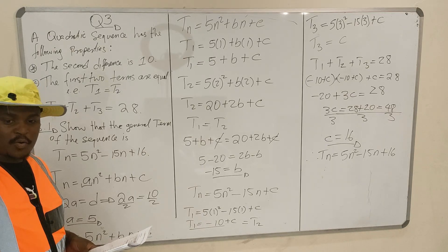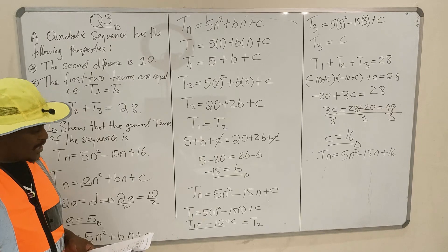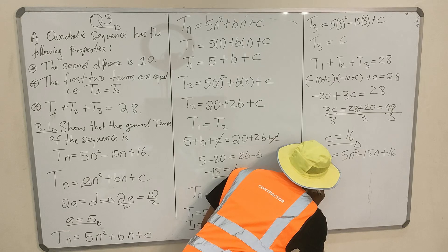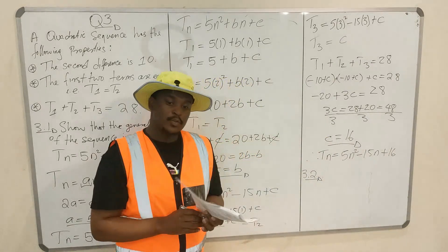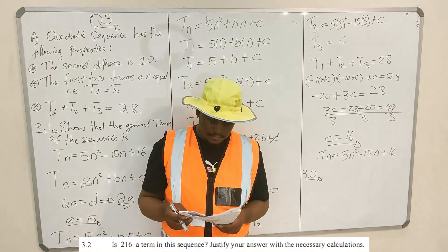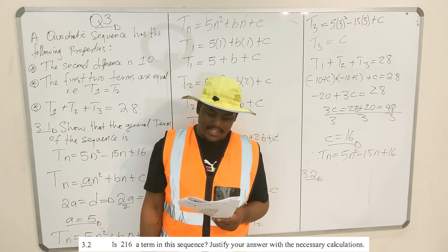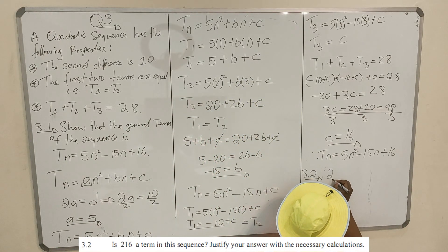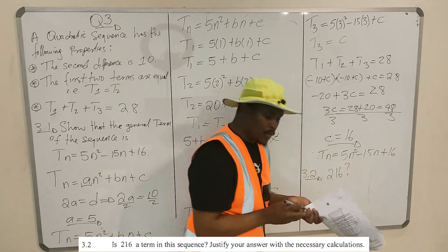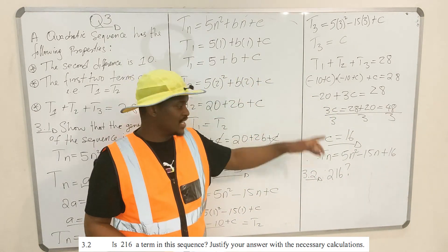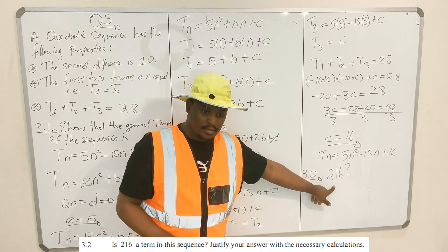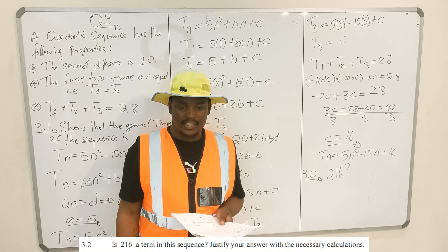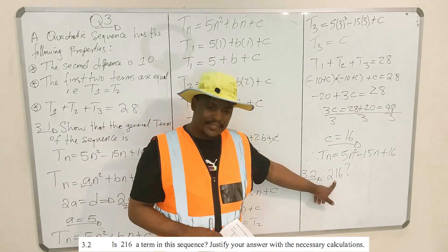Moving to question 3.2 now. Question 3.2: is 216 a term in this sequence? They are asking whether 216 falls in this sequence, and they say justify your answer with necessary calculations.